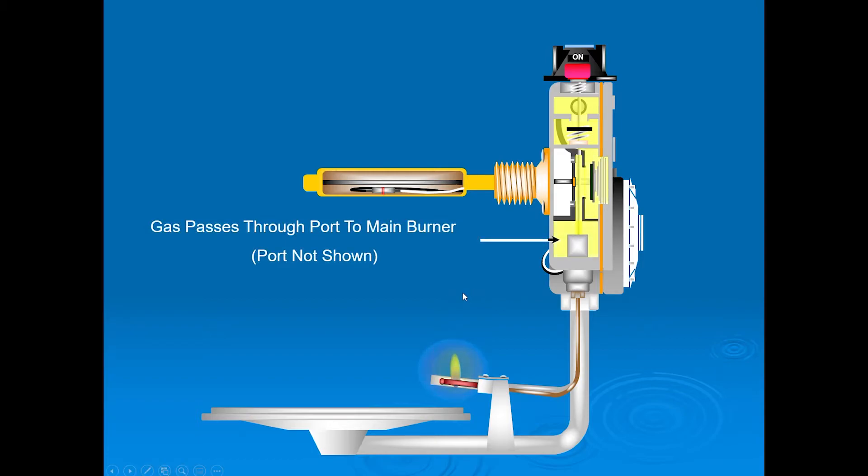Okay, now we are ready to light up the main burner. So gas is going to flow down through this chamber into the main burner. Now the gas is allowed to pass through because of this right here.